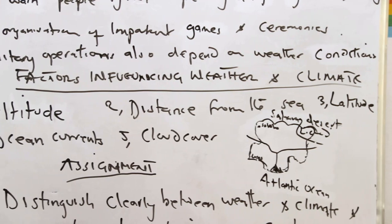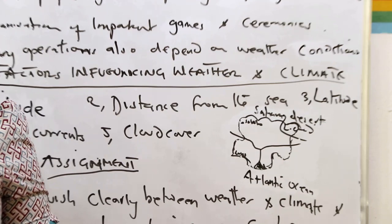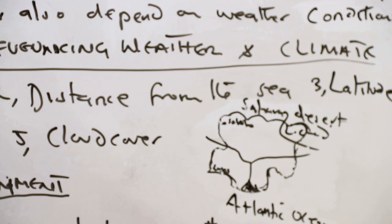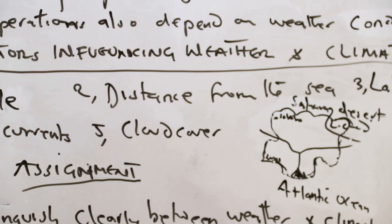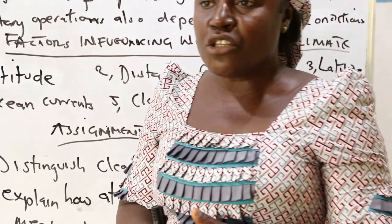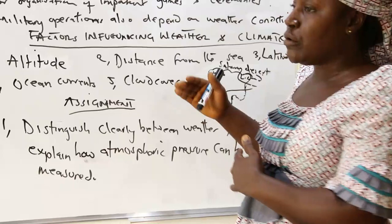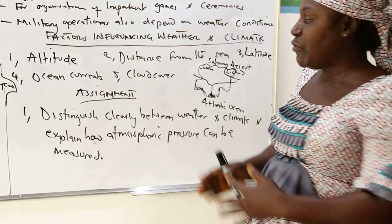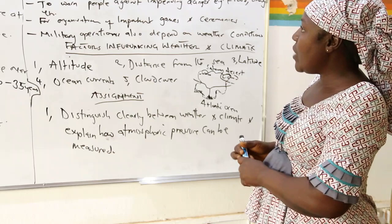The third major factor is latitude — the latitudinal location of an area in respect to the equator, which is the central line that divides the globe into two equal parts. Different areas are located on different parts of the world. Areas situated around the equatorial region tend to experience a much higher temperature because of their closeness to the equator, where there is a direct concentration of the heat of the sun.